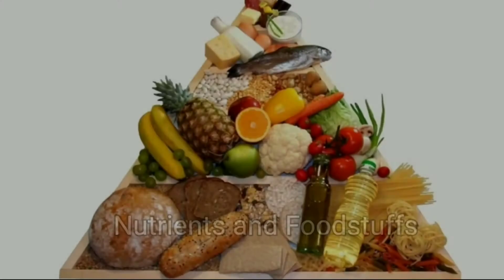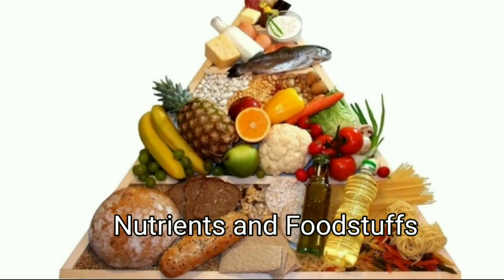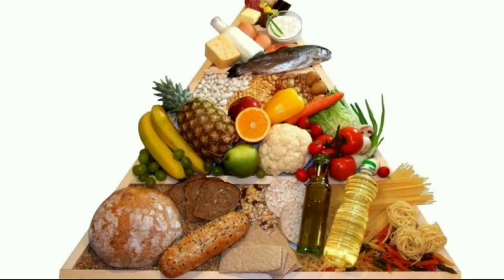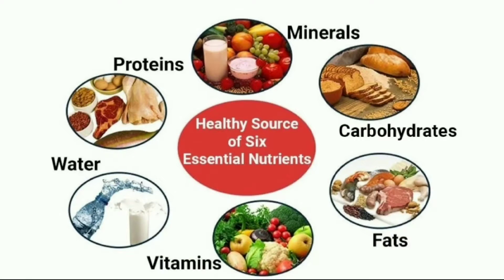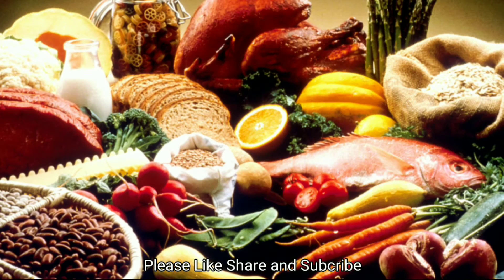Nutrients and Foodstuffs. There are 6 main nutrients in our food: carbohydrates, fats, proteins, fiber, vitamins, and minerals. These nutrients are present in the different food items we eat in differing proportions. Let us learn more about some of them.